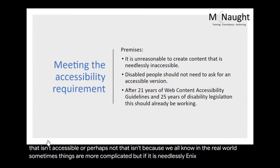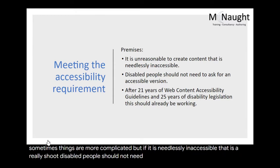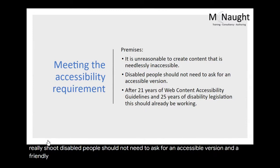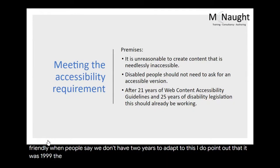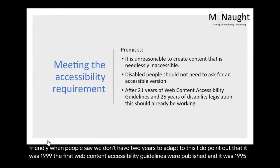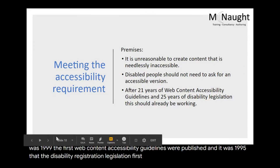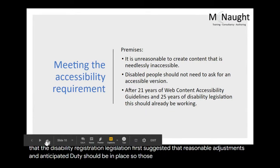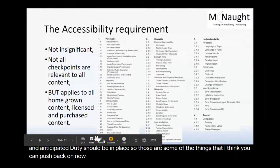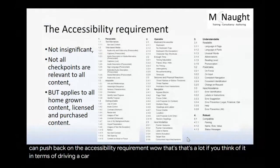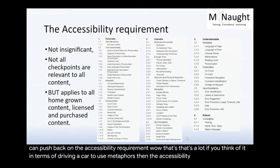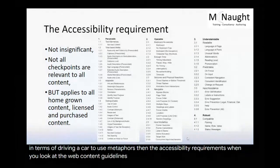You will meet the accessibility requirement because it is unreasonable to create content that is needlessly inaccessible — that is a real issue. Disabled people should not need to ask for an accessible version. And frankly, when people say, oh, we've only had two years to adapt to this, I do point out that it was 1999 when the first Web Content Accessibility Guidelines were published, and it was 1995 that the disability legislation first suggested that reasonable adjustments and anticipatory duties should be in place. The accessibility requirement — if you think of it in terms of driving a car, it's about being under the bonnet, the cogs, the fan belts, the valves. But actually the user requirement is like sitting in the driver's seat — can I adjust the seat, can I tilt it back, can I make the mirrors work?